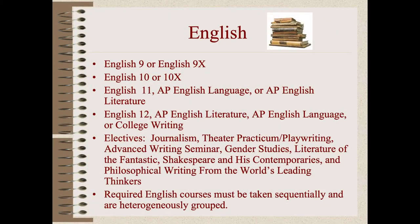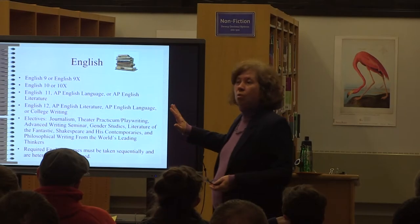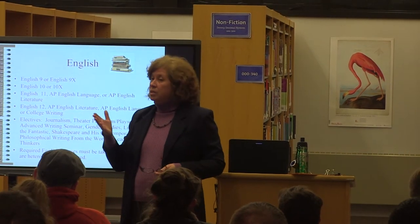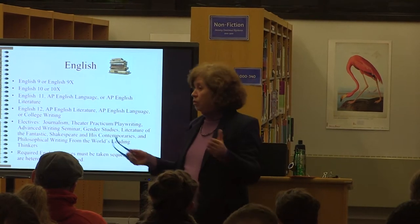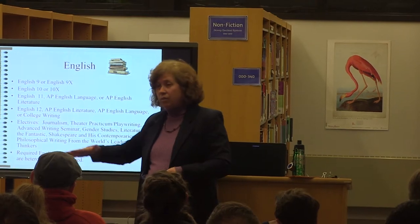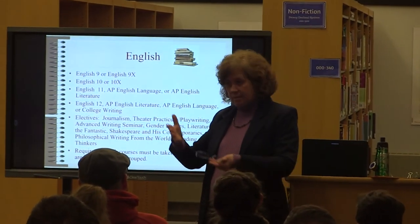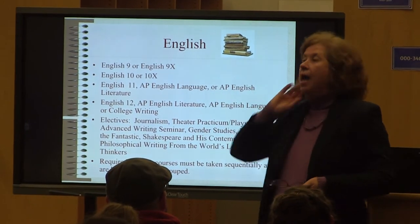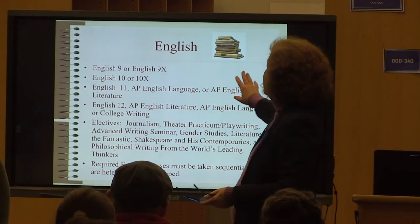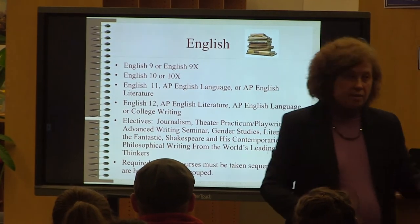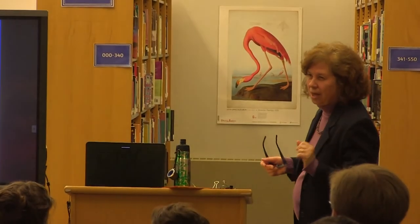Now we'll look at individual departments. In ninth grade, the English requirement is fairly simple: English 9 or English 9 Honors. You don't make that choice with English until you start the class, because the English department handles summer reading requirements and doesn't require additional work for honors placement. When a student starts English — whether fall or spring — the teacher will explain what's required at the honors level versus the regular level, and the student will choose at that point.